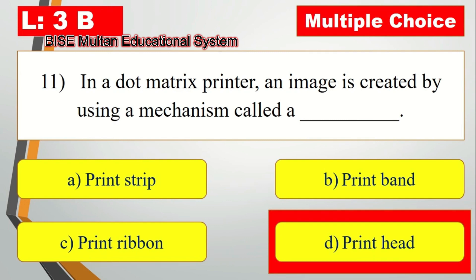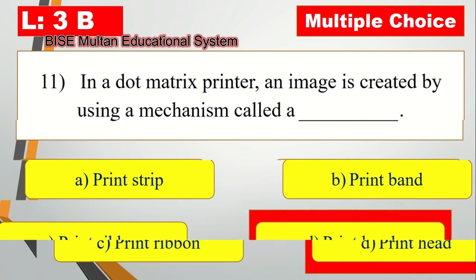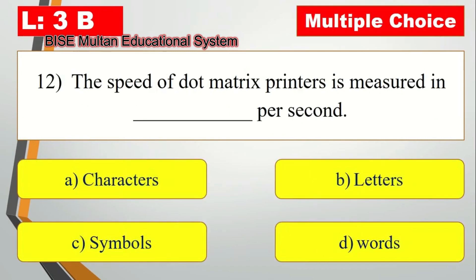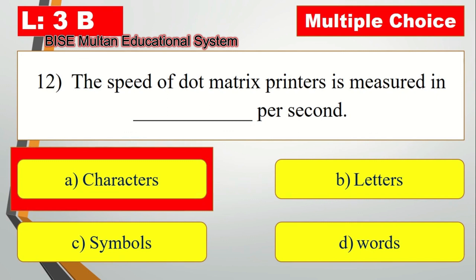Question number 12. The speed of dot matrix printers is measured in blank per second. The answer is characters per second.